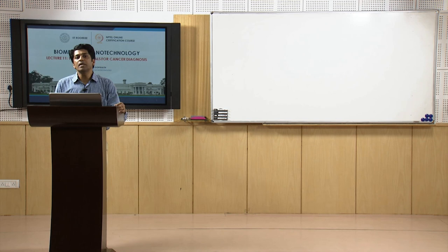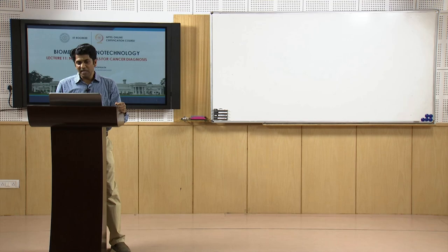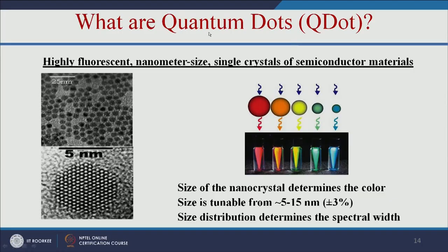In cancer diagnosis, various nanomaterials play an important role. The main important nanomaterial is quantum dots — highly fluorescent, nanometer-sized single crystals of semiconductor materials. With respect to size, they give a different color, and the size is tunable between 5 to 50 nanometers. Based on the size, they emit different fluorescence — that is the advantage of quantum dots.